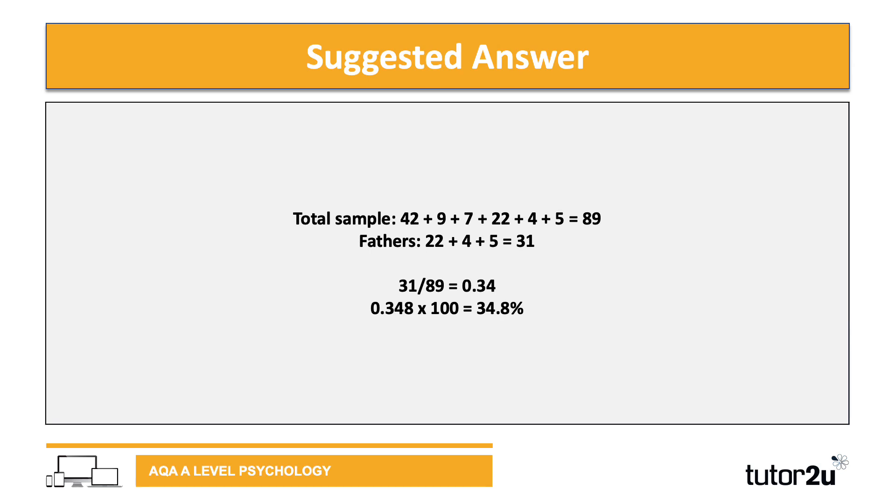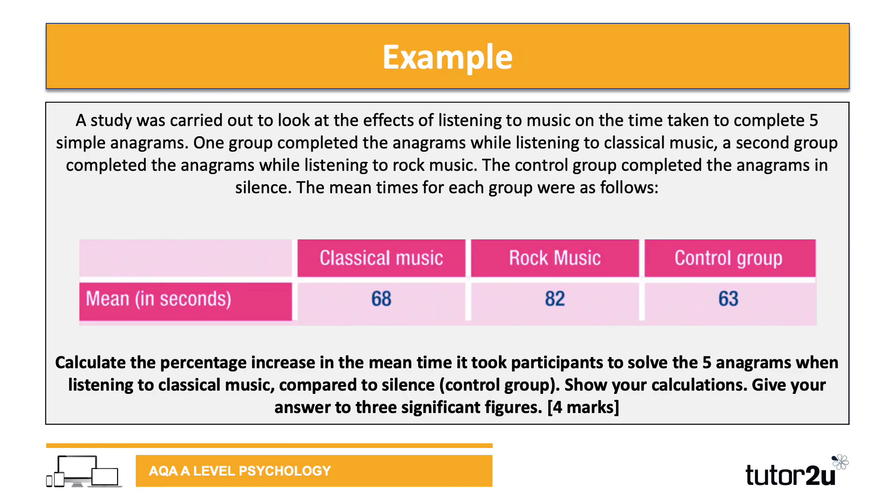Our last question. We've got another stem with a table of findings. This time, calculate the percentage increase in the mean time it took participants to solve the five anagrams when listening to classical music compared to the control group. It clearly says show your calculations, and most importantly, give your answer to three significant figures. We're assessing two things - percentages and whether you can give an answer to three significant figures. Pause the video and have a go at working this out, then we'll go through the answer.